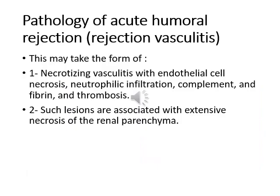In the case of acute humoral rejection, which we call rejection vasculitis, affecting mainly the vessels, we can see necrotizing vasculitis and necrosis of the endothelial cells, neutrophilic infiltration, complement and fibrin deposition, with thrombosis of these vessels. This thrombosis leads to extensive necrosis of the renal parenchyma due to ischemia.